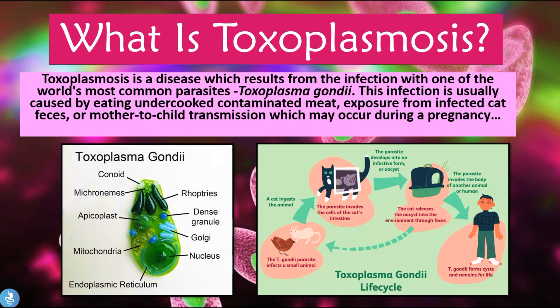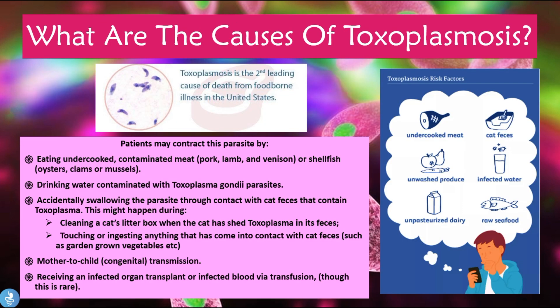Patients may contract the parasite by eating undercooked contaminated meat such as pork, lamb, and venison, or shellfish such as oysters, clams, or mussels — because oocysts can contaminate water sources where shellfish live. Patients can also contract the disease by drinking contaminated water containing Toxoplasma gondii, or by accidentally swallowing the parasite through contact with cat feces — for example, when cleaning a litter box, or by touching or ingesting anything that has come into contact with cat feces, such as garden-grown vegetables.